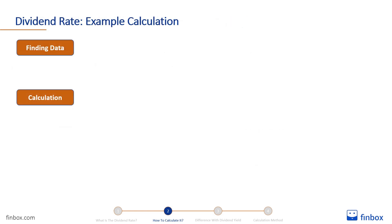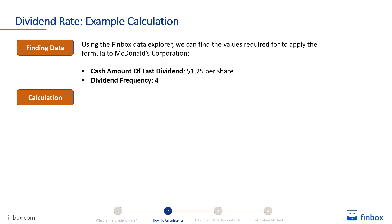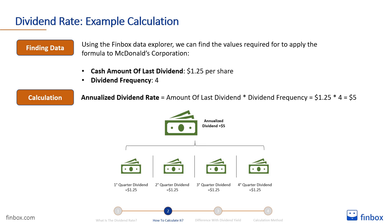We can use the formula mentioned earlier to calculate McDonald's Corporation's dividend rate. Using the Finbox Data Explorer, we can find the values required to apply the formula. The cash amount of McDonald's last dividend is $1.25 per share, while its dividend frequency is 4, meaning that it pays dividends quarterly. We can calculate the annualized dividend rate by multiplying the cash amount of the last dividend by the dividend frequency.